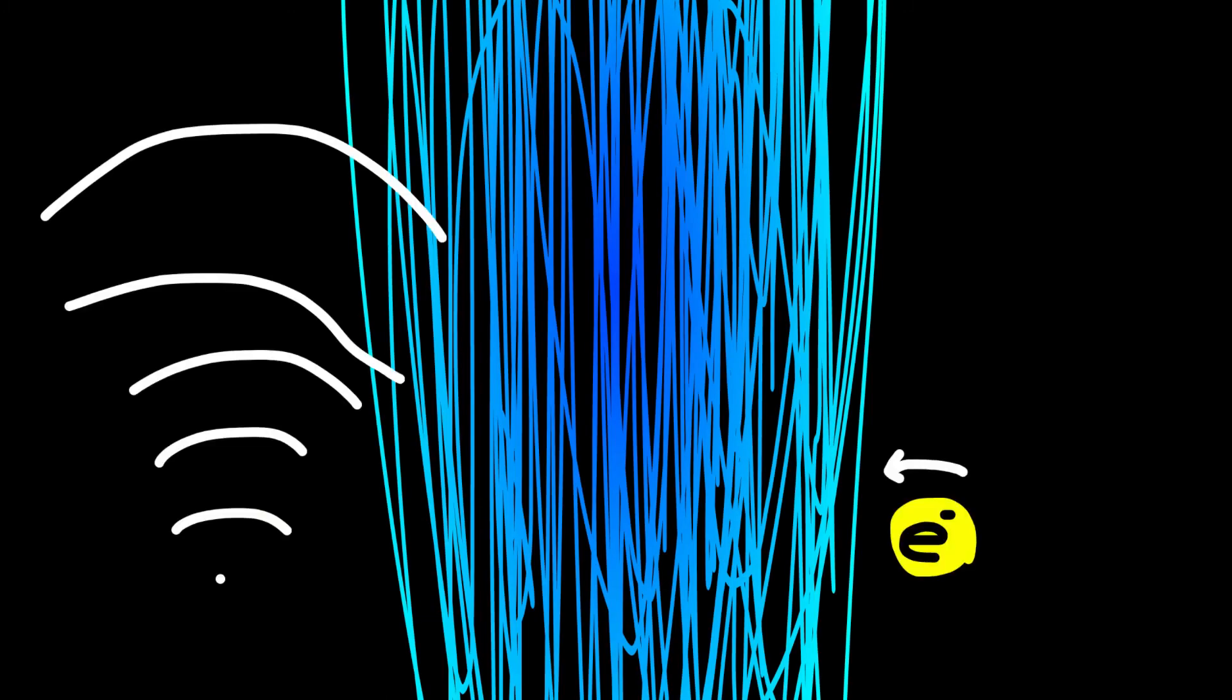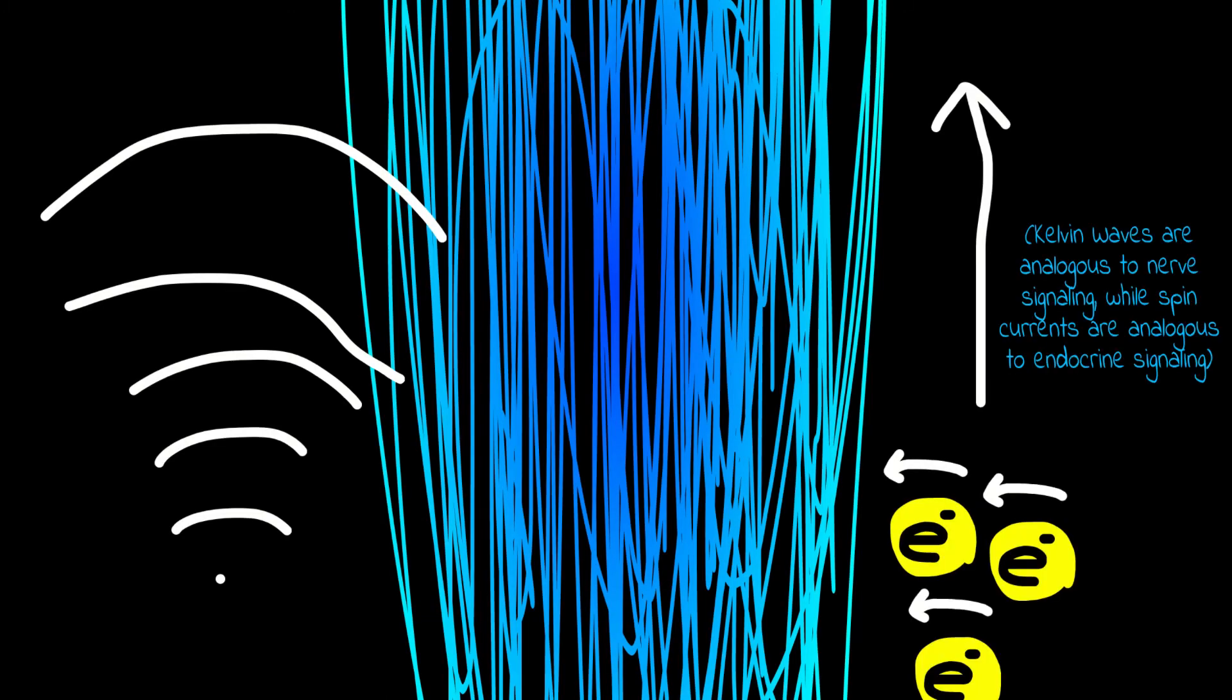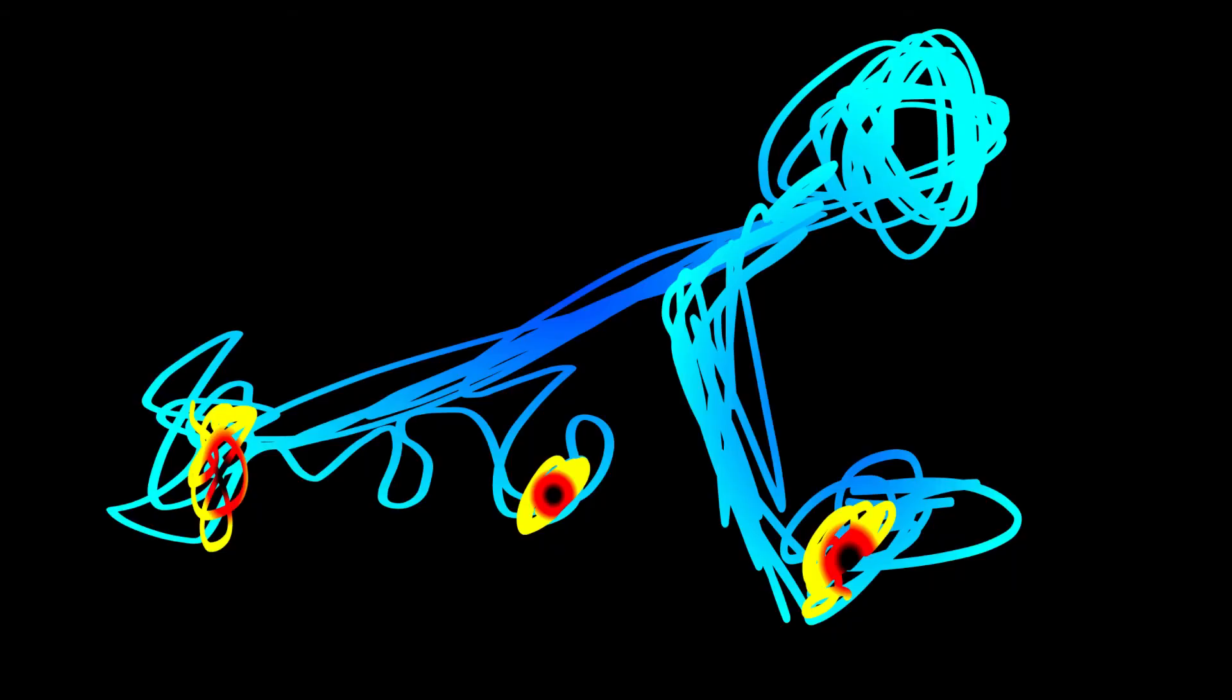Kelvin waves and spin currents are used to send signals throughout the body of a knot. The nervous system of knots is distributed along different points of their body, and the limbs are autonomous and can act independently.